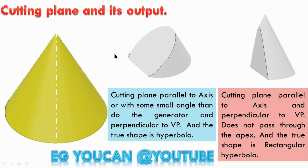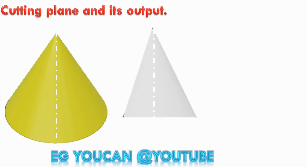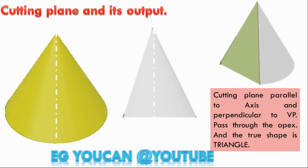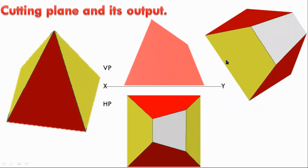Then you cut the axis — but if the cutting plane passes through the apex point, there is a rectangular hyperbola. The cone gives a triangular output when the cutting plane passes through the apex. If you look at a square prism, the output is a trapezoid. The base is VP. Then the cutting plane is inclined to HP and perpendicular to VP — the output is a trapezoid.